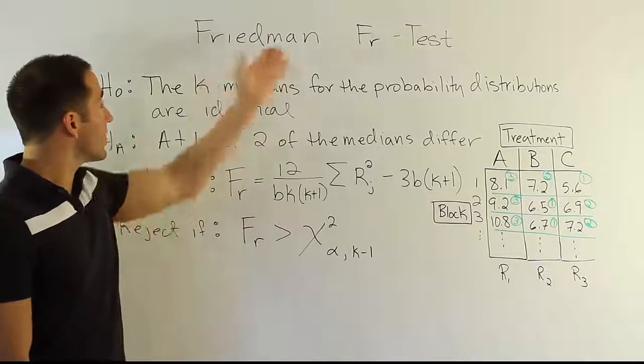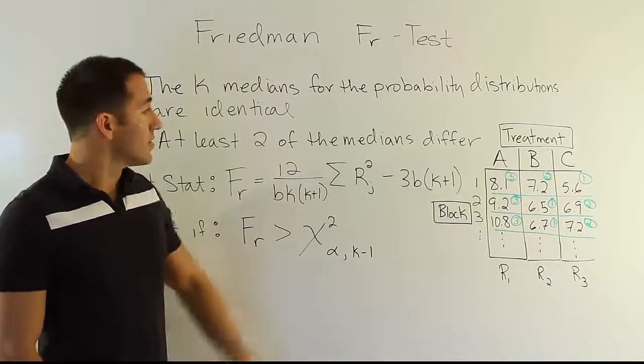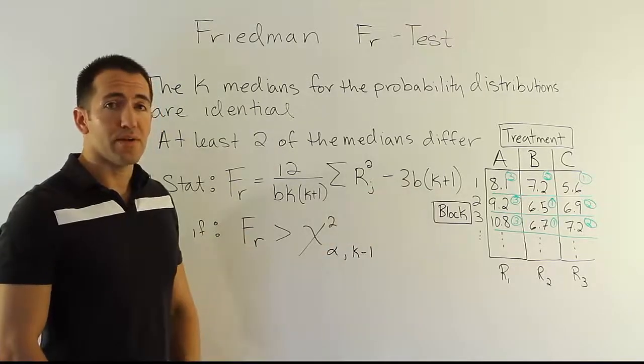So that's it. So this is a great alternative to the randomized block design ANOVA procedure that we used earlier on in the course. It's big news when you can't assume normality underneath the data.